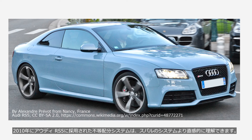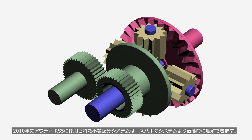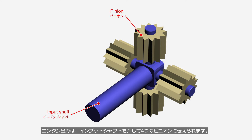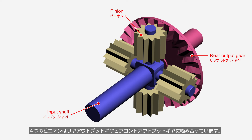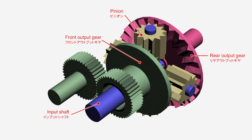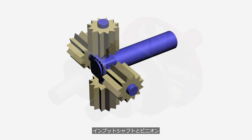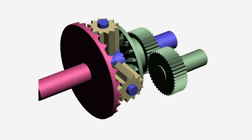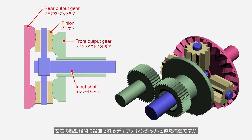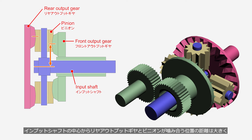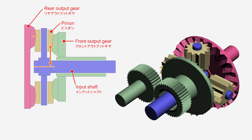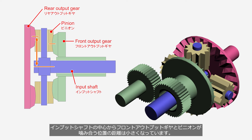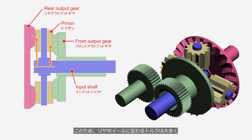The uneven torque distribution system adopted in the Audi RS5 in 2010 is more intuitively understandable than Subaru's system. Engine output is transmitted to four pinions via the input shaft, which mesh with the rear output gear and the front output gear. It has a structure similar to a differential installed between the left and right drive wheels, but the major difference is that the two output gears have different diameters. The distance from the center of the input shaft to where the rear output gear and pinion mesh is large, while the distance to where the front output gear and pinion mesh is smaller. As a result, the torque transmitted to the rear wheels is larger, while the torque transmitted to the front wheels is smaller.